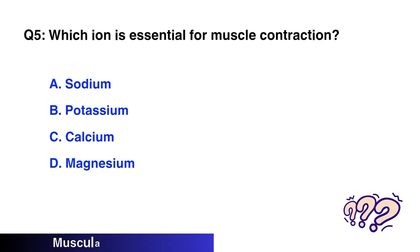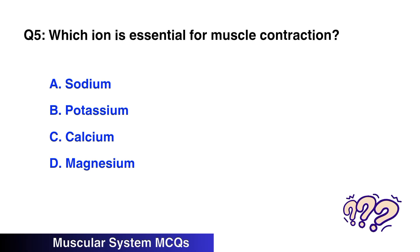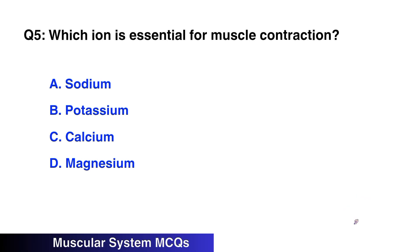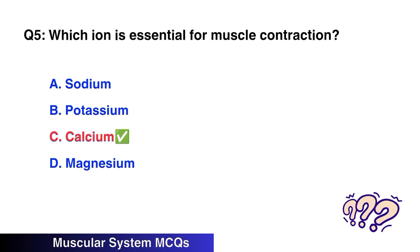Question No. 5: Which ion is essential for muscle contraction? The right option is C: Calcium.